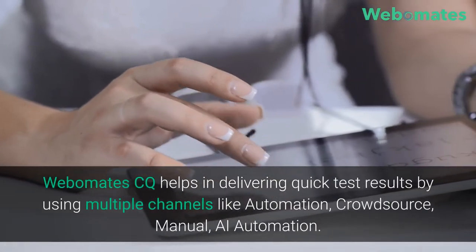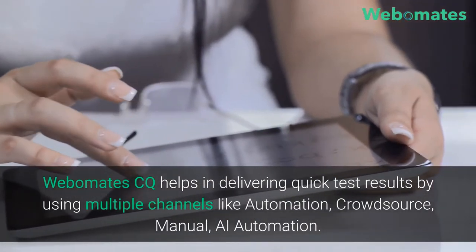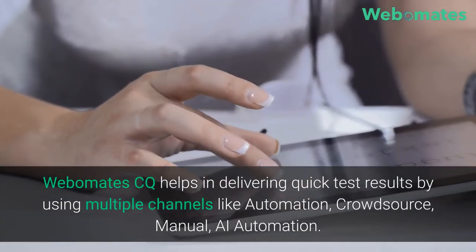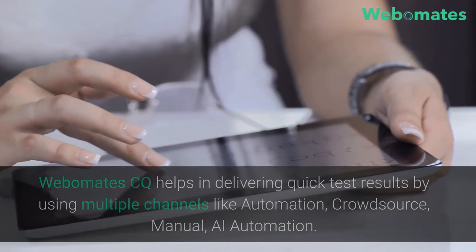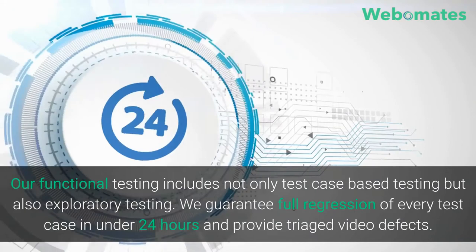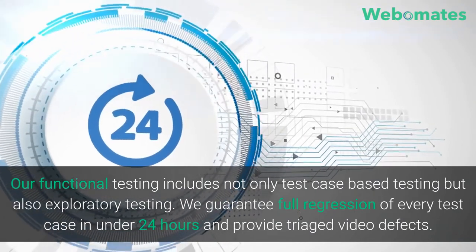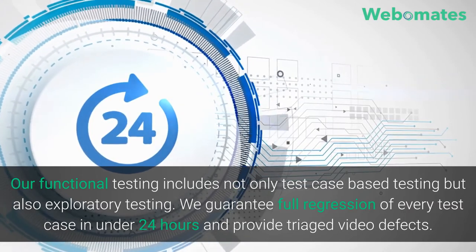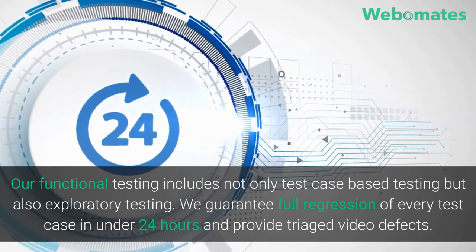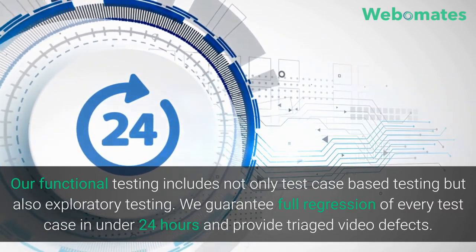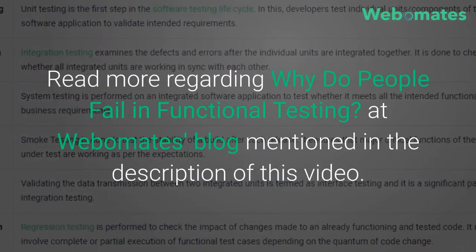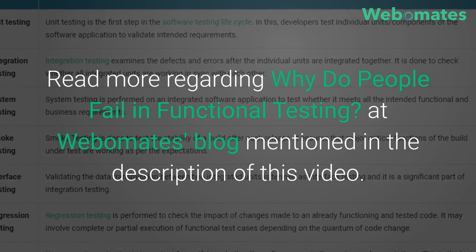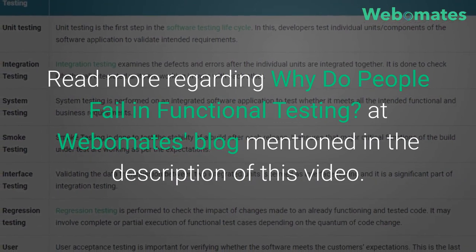Webamates CQ helps in delivering quick test results by using multiple channels like automation, crowdsource, manual, and AI automation. Our functional testing includes not only test case based testing but also exploratory testing. We guarantee full regression of every test case in under 24 hours and provide triaged video defects. Read more regarding why people fail in functional testing at the Webamates blog, mentioned in the description of this video.